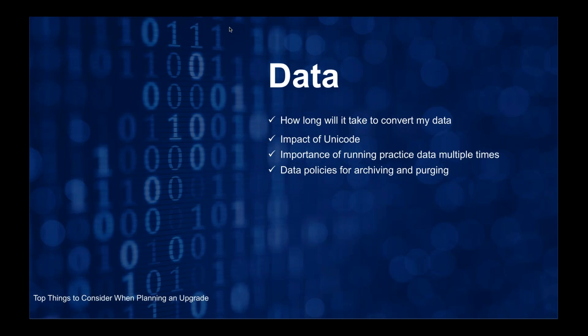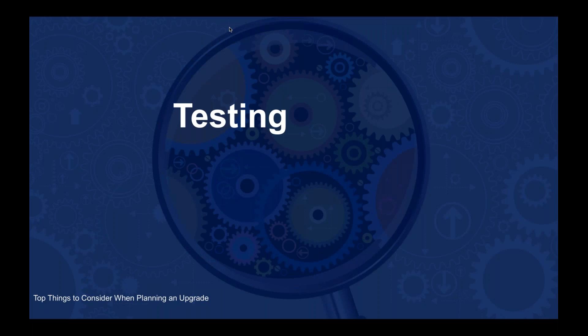From a data perspective, look at how much data you have, because it will take time to convert from whatever release you're on into 9.2. Depending on how far back you go, that may include a Unicode conversion, which adds time and increases overall data size. To truly understand the effort, run multiple practice conversions during your project — that gives you the timing needed at go-live weekend. It's also a good time to revisit data policies around archiving and purging. If your data goes all the way back to 1996 and you've never purged or archived, now might be a good time to trim it down prior to upgrading.